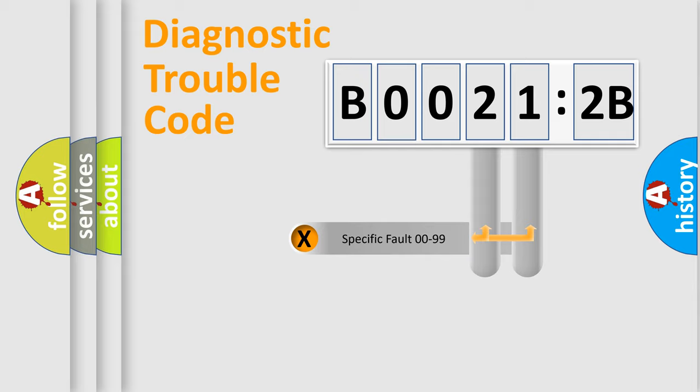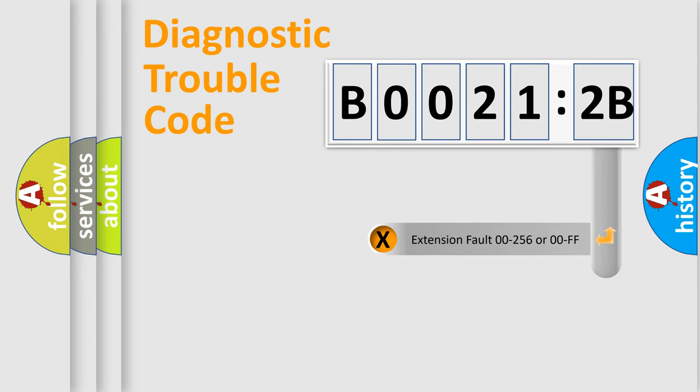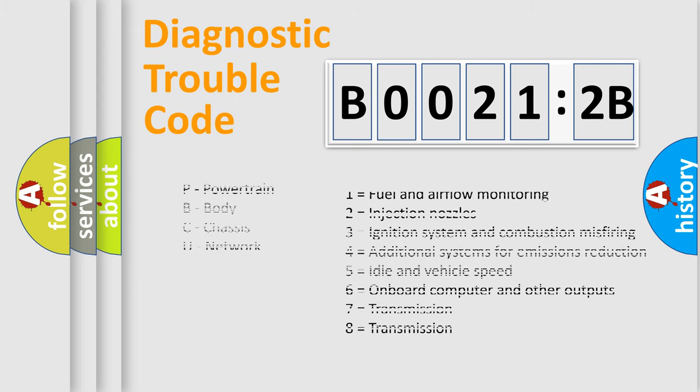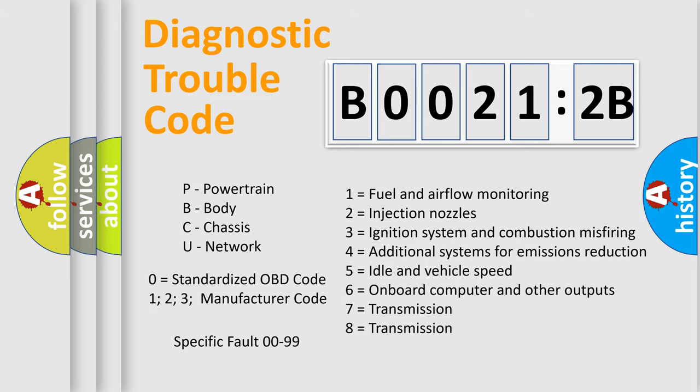Only the last two characters define the specific fault of the group. The add-on to the error code serves to specify the status in more detail, for example, a short to ground. Let's not forget that such a division is valid only if the second character code is expressed by the number zero.